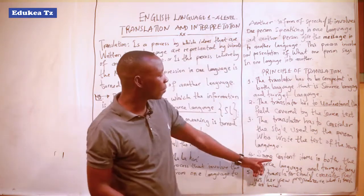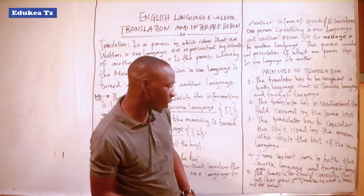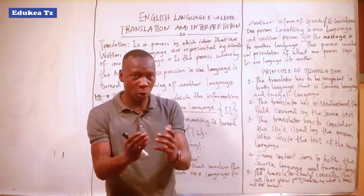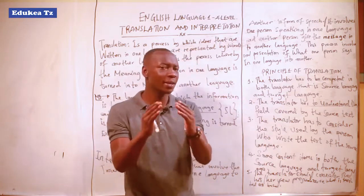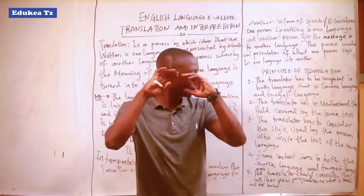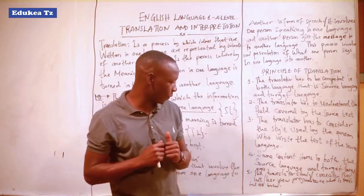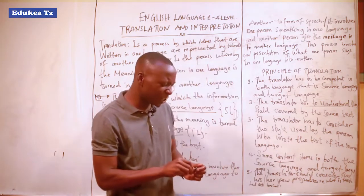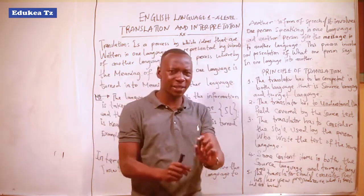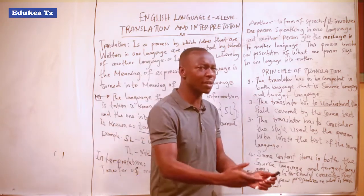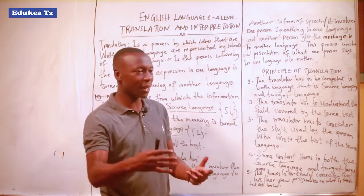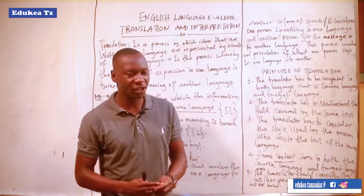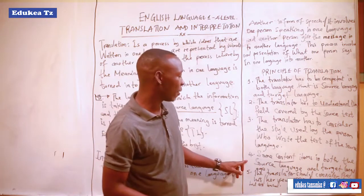The fourth principle: consider the content in both the source language and the target language. Sometimes the language spoken by the speaker uses very hard vocabulary. In that case, you deal with the content — the message. Because the speaker can speak many things, but the message is very few key points. You extract the message and turn it to the listener so they can understand: the speaker has been talking about environmental conservation, or the development of language, for example.